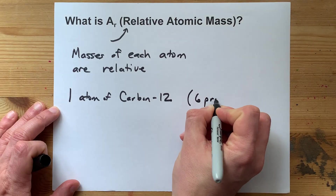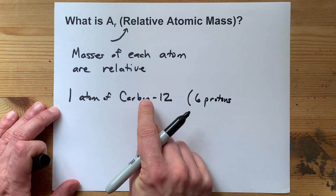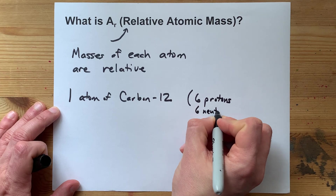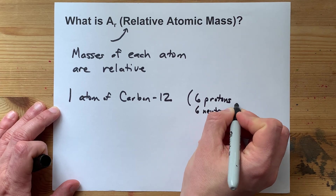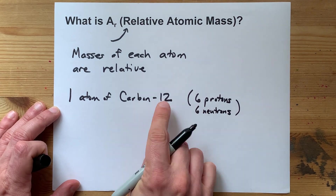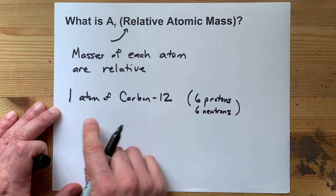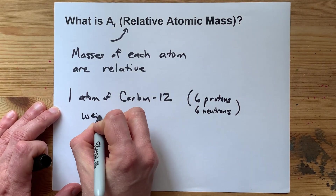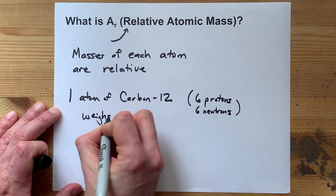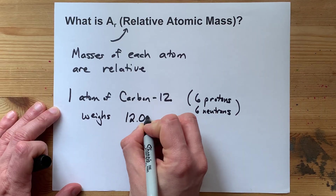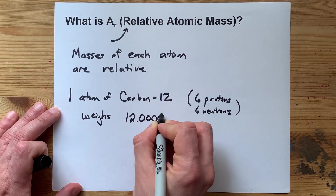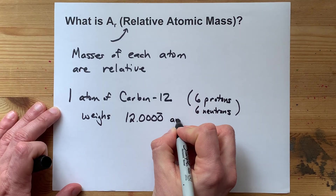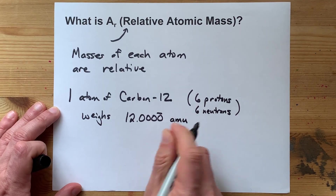Six protons — that's what makes it carbon — and six neutrons, that's what gives it a total mass number of 12. We say that one atom of that weighs exactly 12.0000 — infinitely repeating — atomic mass units.